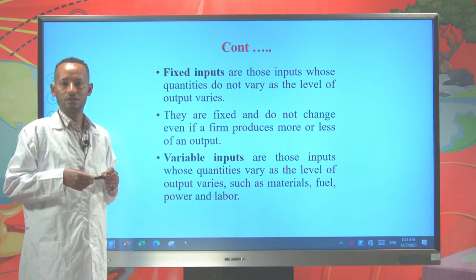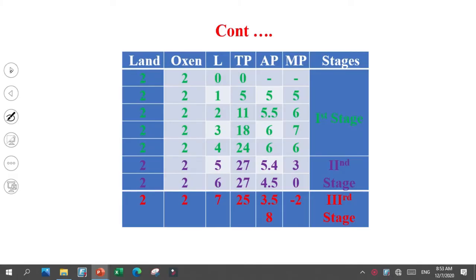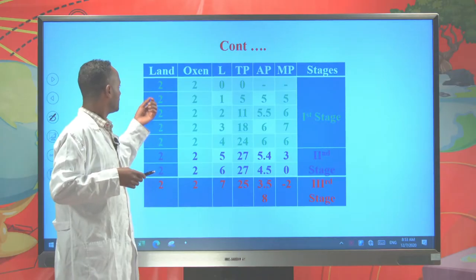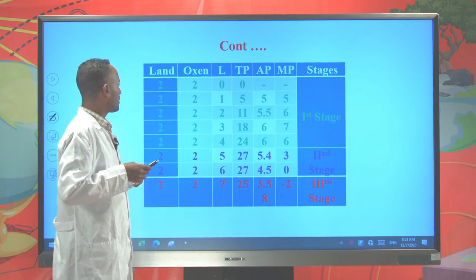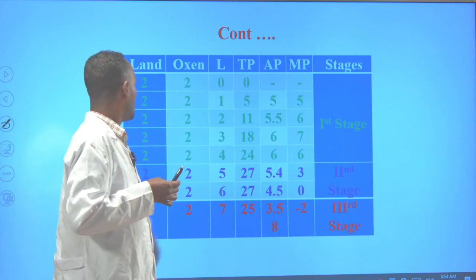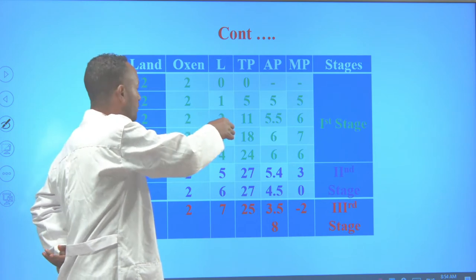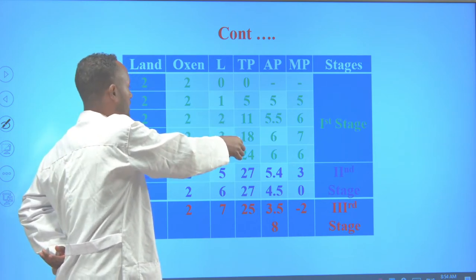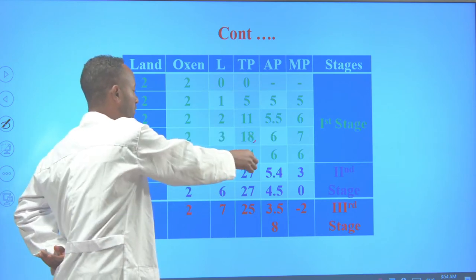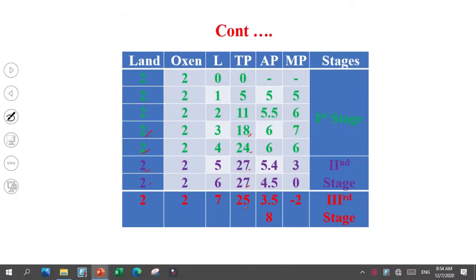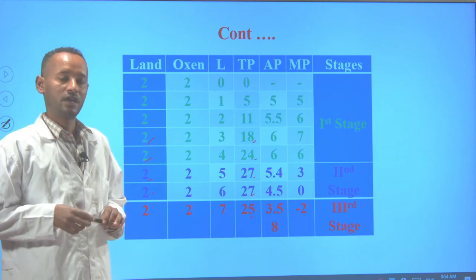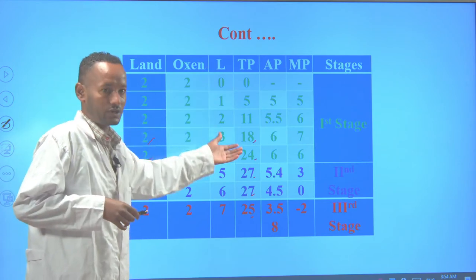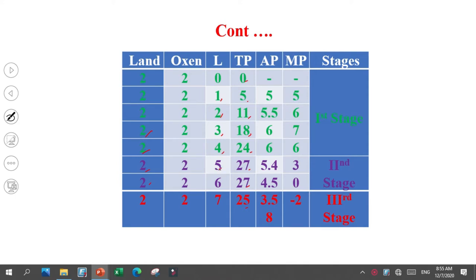Now let's illustrate these terms using the following farmer model. Under the production function with one variable input, the farmer produces wheat on two hectares of land. The total product of two hectares of land ranges from zero up to 27 quintals and back down to 25 quintals. Even though there is a change in the output produced, there is no change in the land employed. Hence, land is considered as a fixed input.